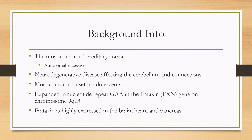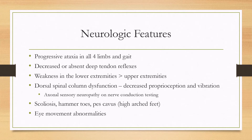Most of the clinical characteristics happen in the brain, heart, and pancreas because frataxin is highly expressed in these organs. For neurologic features, almost all patients will have progressive ataxia in all four limbs as well as ataxic gait. They'll have a wide-based gait, and about 80 to 90 percent of patients will have decreased or absent deep tendon reflexes.